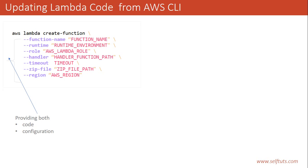To update the Lambda function code you have to use a separate action, and to update the Lambda function configuration you have to use a separate action. The most important thing is you must read the documentation of AWS CLI Lambda to understand this.